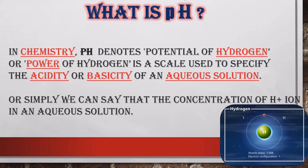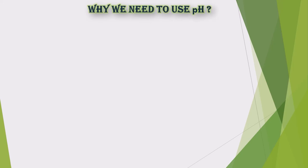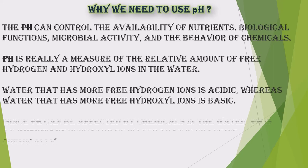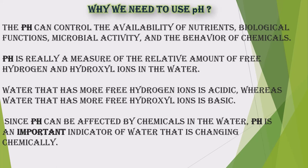Why do we need to use pH? pH can control the availability of nutrients, biological function, microbial activity, and the behavior of chemicals. pH is really a measure of the relative amount of hydrogen and hydroxyl ions in water. Water that has more free hydrogen ions is acidic, whereas water that has more hydroxyl ions is basic.